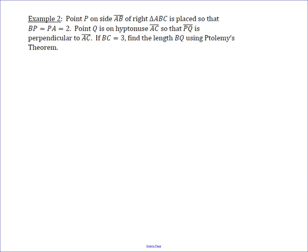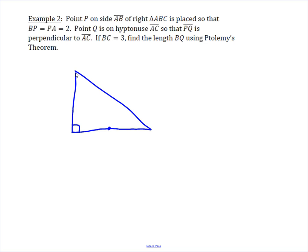In this problem, we've got a triangle ABC with B at the right angle, and based on the information given, it's a 3-4-5 right triangle. You're given points P, B, A, and C. BC is 3, P is the midpoint of AB, so BP and PA are each 2, which means CA is 5.